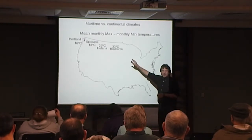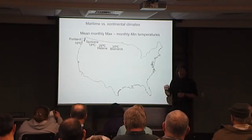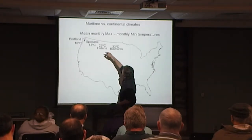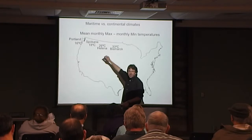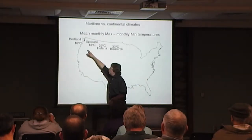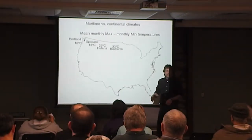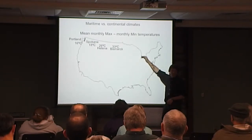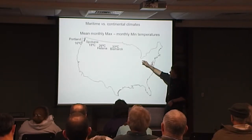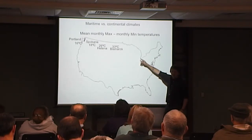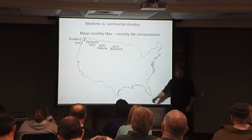Maritime climates tend to be much more buffered in terms of their extremes compared to continental climates. This is the difference between the average warmest and average coldest month. In Portland, Oregon, that's 16 degrees C. Now these are all at the same latitude. So as you move inland — Spokane, Helena, Bismarck — Bismarck is 33 degrees C.